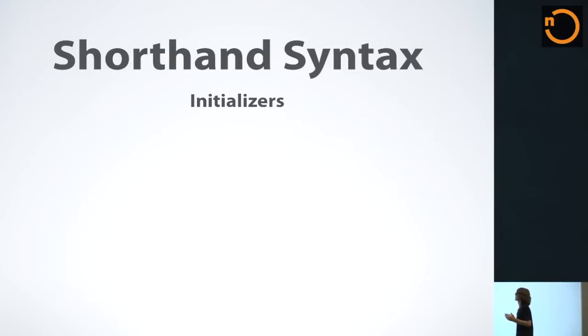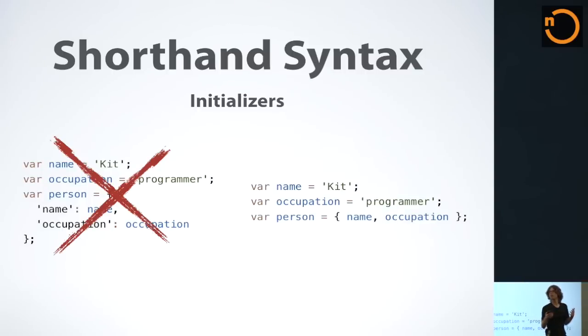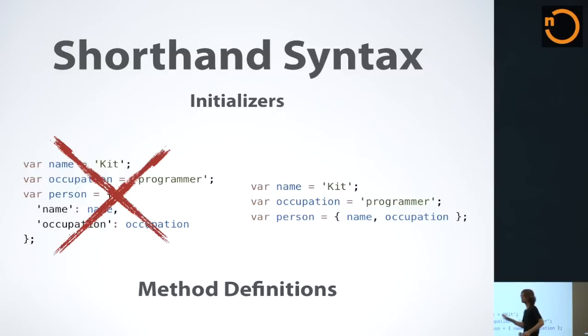On the line of destructuring assignment is also the shorthand syntax. There are two forms of shorthand syntax for initializers and method definitions. The first one is for object initializers. In this example, we have two variables, name and occupation, and then we're constructing an object from them with name and occupation properties that are bound to the values of these two variables. But that's a bit redundant. We already have the name and occupation variables that are sufficiently descriptive. So what we would do is we can just define a person as containing the name and occupation variables. These two examples produce an identical result, but you can see how much it cuts down on repetition.